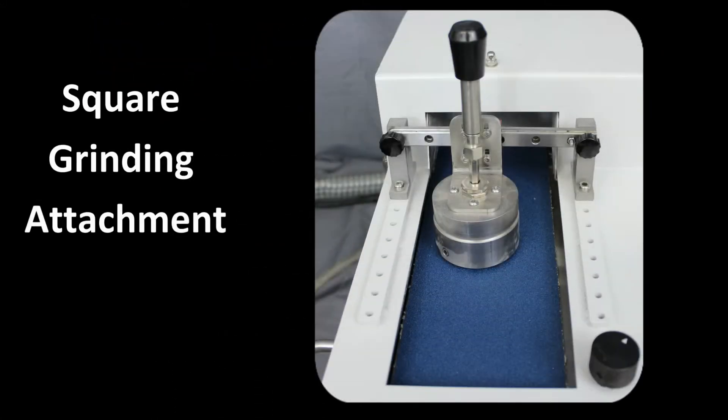The square grinding attachment is attached to the Penta 7500 to hold the mounted specimen square to the grinding belt. It is spring loaded so that additional force can be applied to grinding the mount.